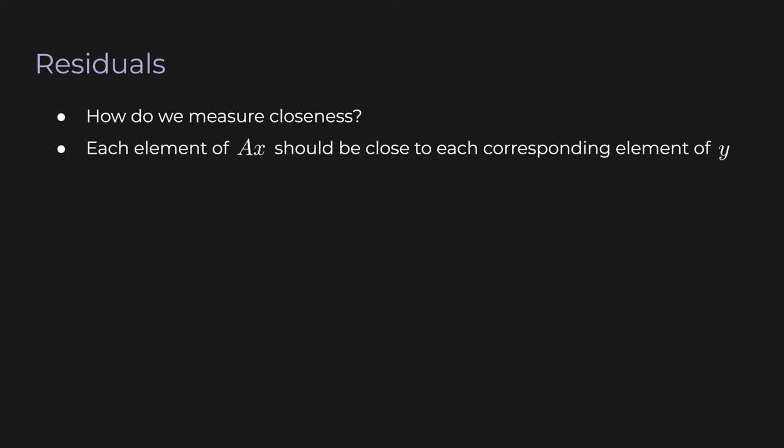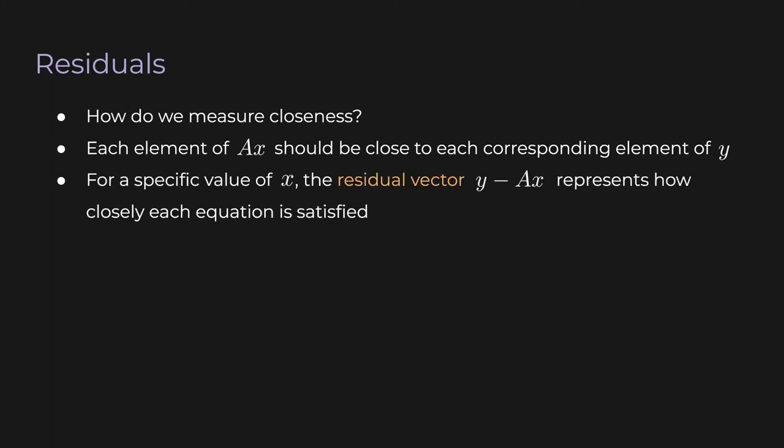Each element of Ax should be close to each corresponding element of y. For each specific value of x we can compute something called the residual vector. It's just y minus Ax. And that represents how closely each equation is satisfied. So y minus Ax is another vector. And each element tells you the difference between y and Ax at that element.